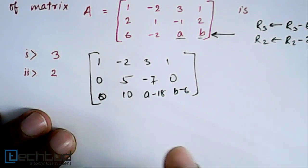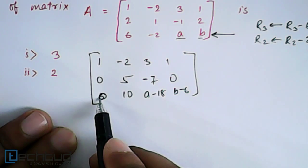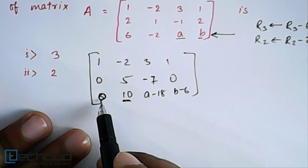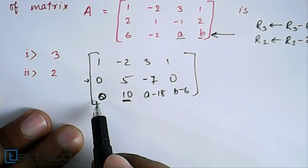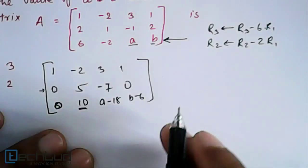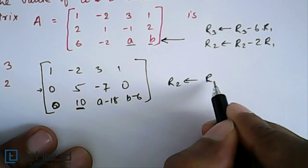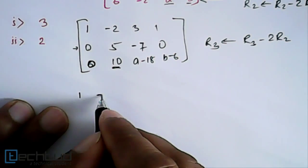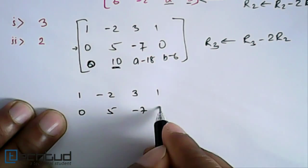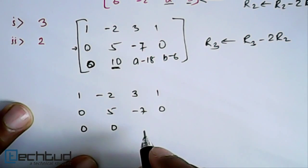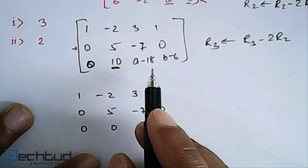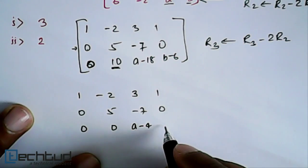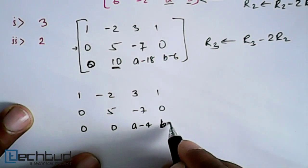Now we will try to make this element zero also. As the first element is zero, now second we have to try to make zero. We will subtract R3 into something from R3. R3 will be replaced by R3 minus 2 times R2. The matrix will become 1, -2, 3, 1; then 0, 5, -7, 0; and here it will be 0, 0, a-4, b-6.